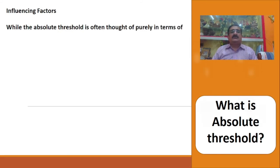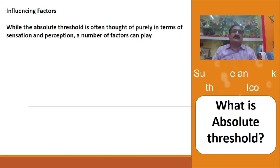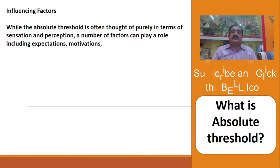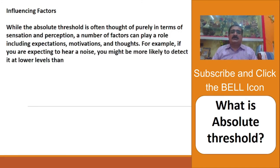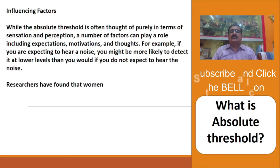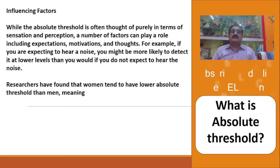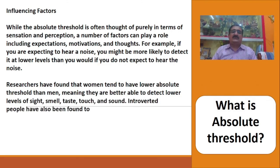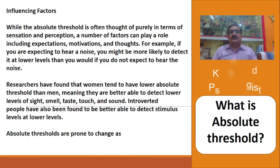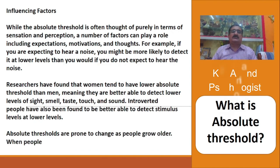While absolute threshold is often thought of purely in terms of sensation and perception, a number of factors can play a role, including expectations, motivation, and thoughts. For example, if you are expecting to hear a noise, you might be more likely to detect it at lower levels than if you do not expect to hear it. Researchers have found that women tend to have a lower absolute threshold than men, meaning they are better able to detect lower levels of sight, smell, taste, touch, and sound. Introverted people have also been found to be better able to detect stimuli at lower levels.